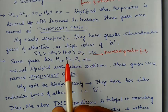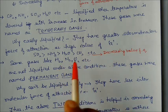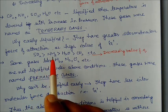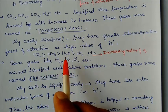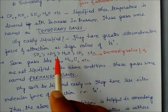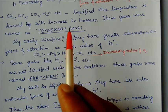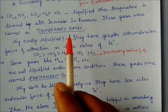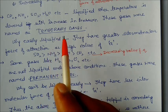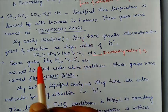They have a high value of 'A' that we have already studied in the van der Waals gas equation. The 'A' value order is: sulfur dioxide > ammonia > water > carbon dioxide. Due to this high 'A' value, these gases are called temporary gases and can be easily converted into liquid states.